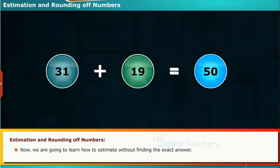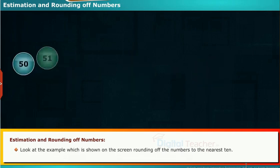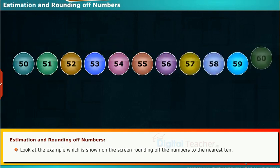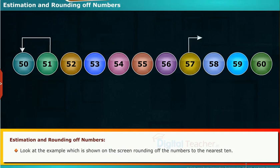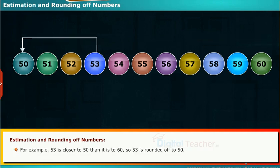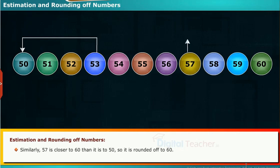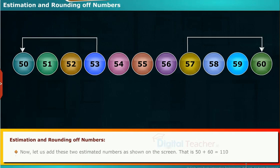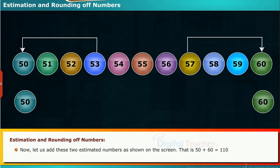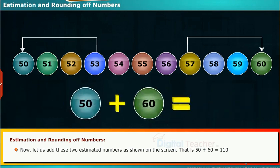Now we are going to learn how to estimate without finding the exact answer. Look at the example shown on the screen: rounding off numbers to the nearest 10. For example, 53 is closer to 50 than it is to 60, so 53 is rounded off to 50. Similarly, 57 is closer to 60 than it is to 50, so it is rounded off to 60. Now, let us add these two estimated numbers as shown: 50 plus 60 is equal to 110.